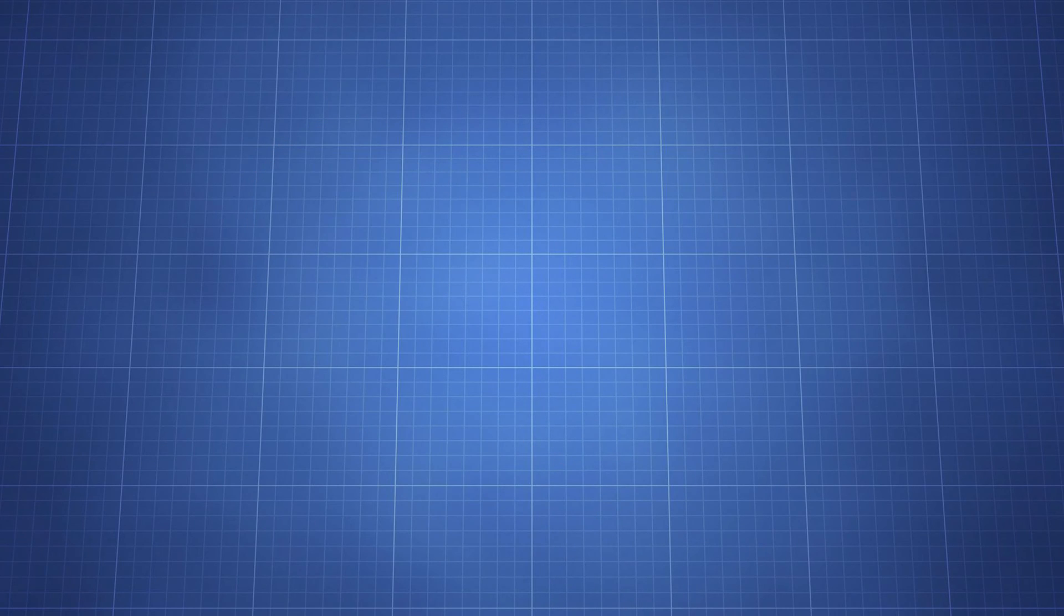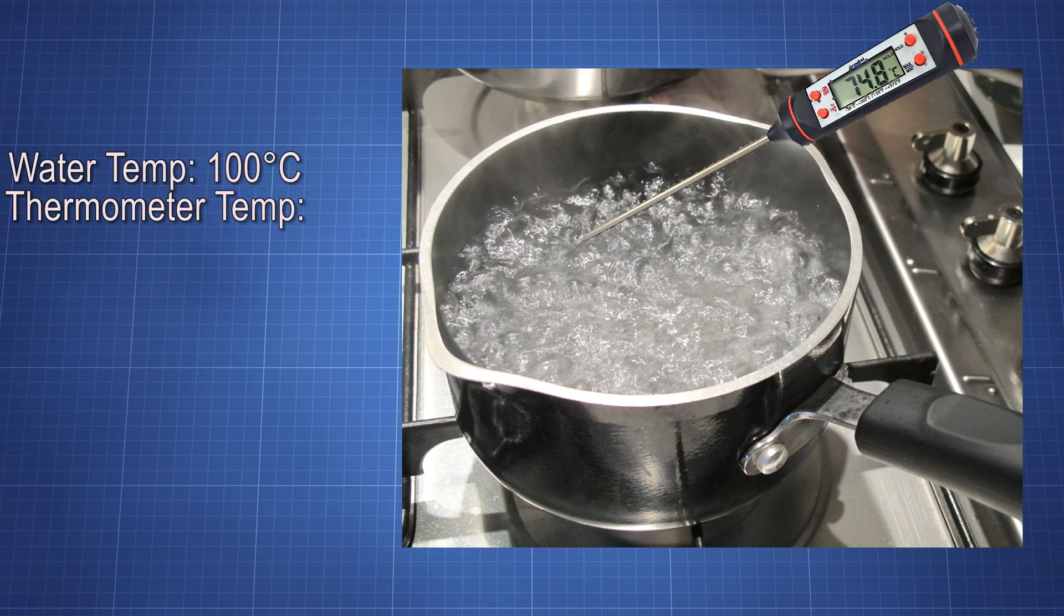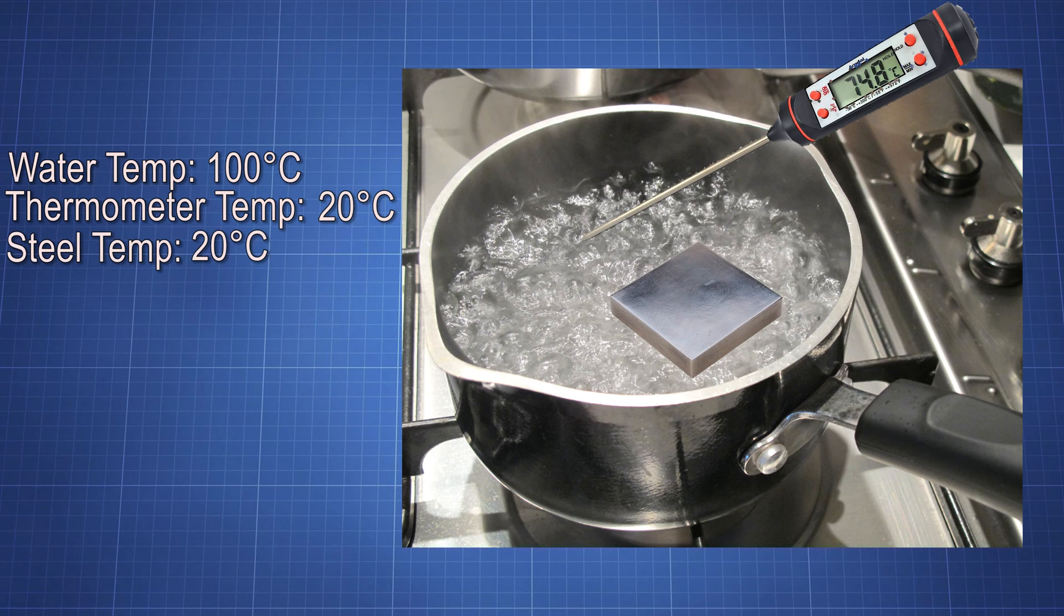Let's say I have a pot of boiling water with a thermometer in it and I add a piece of steel. We know that the water and the steel will come to equilibrium temperature because they're in contact with each other. If the thermometer and the water are also at equilibrium, that means that the thermometer and the steel are also going to be at the same temperature.